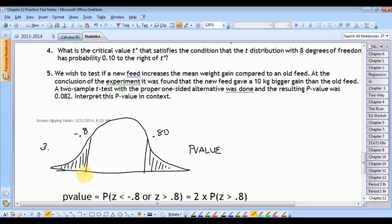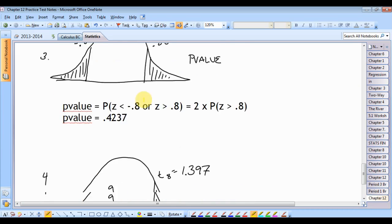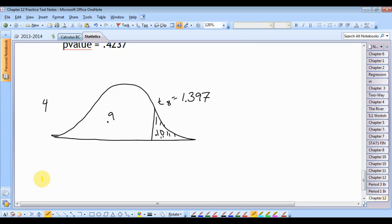Interpret this p-value in context. Now, they didn't give you an alpha, right? So, what alpha do we use? Okay. But I'm kind of jumping the gun because we're supposed to interpret the p-value.